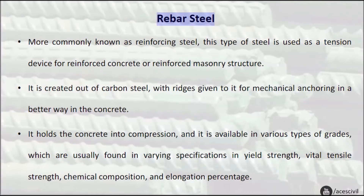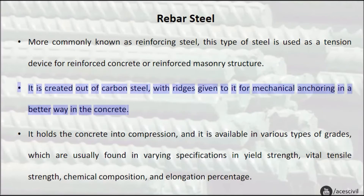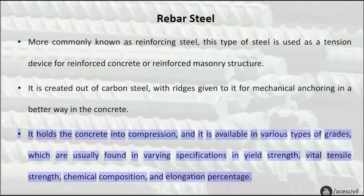Rebar steel, more commonly known as reinforcing steel, is used as a tension device for reinforced concrete or reinforced masonry structures. It is created out of carbon steel, with ridges given to it for mechanical anchoring in a better way in the concrete. It holds the concrete into compression, and it is available in various types of grades, which are usually found in varying specifications in yield strength, vital tensile strength, chemical composition, and elongation percentage.